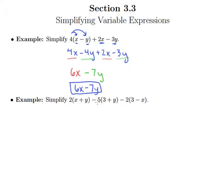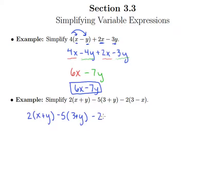Here's another example: we have 2 times (x plus y) minus 5 times (3 plus y) minus 2 times (3 minus x). We can see there are some like terms involved, but we really can't get at them to combine them until we've used the distributive property. So let's rewrite this and apply the distributive property in all three of these spots.